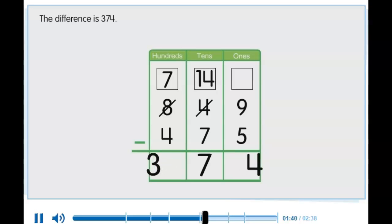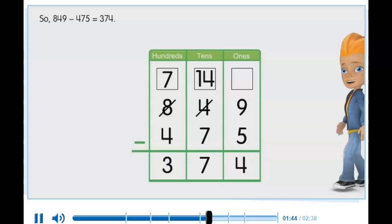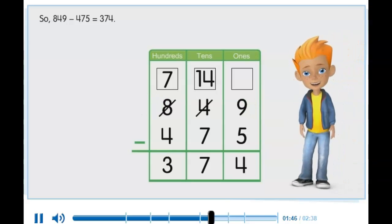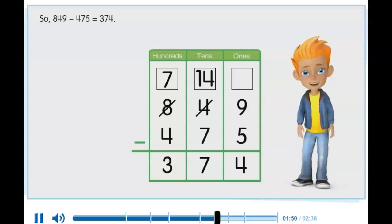The difference is 374. So, 849 minus 475 equals 374.